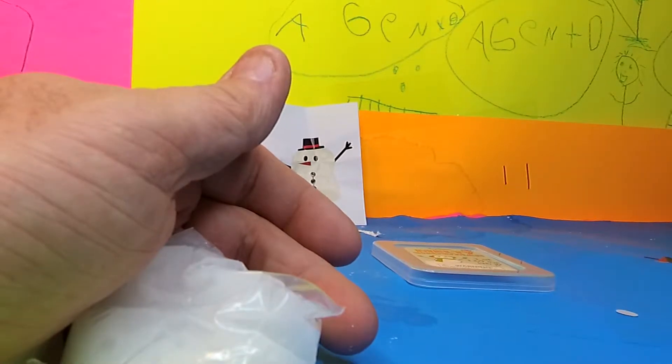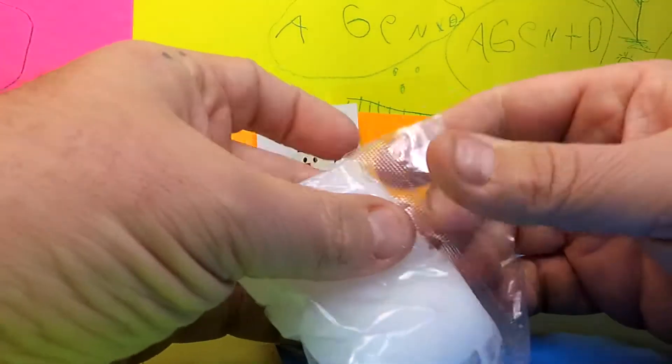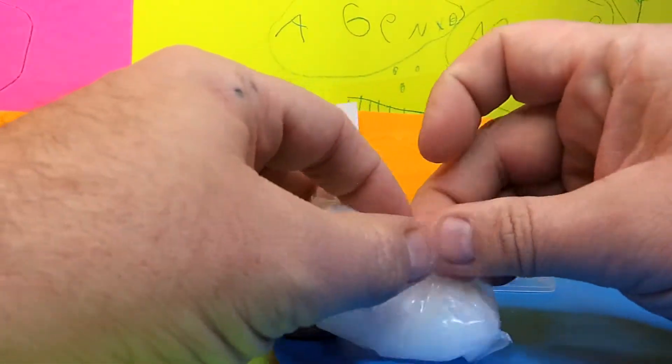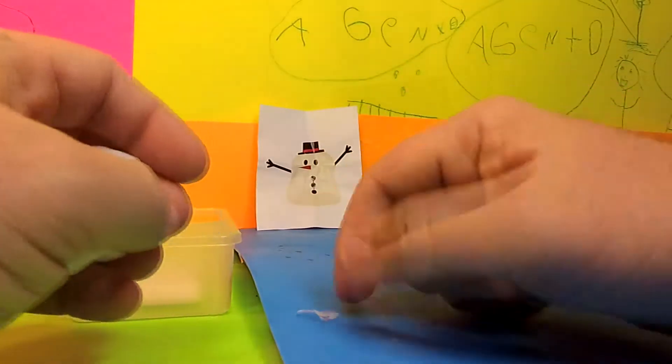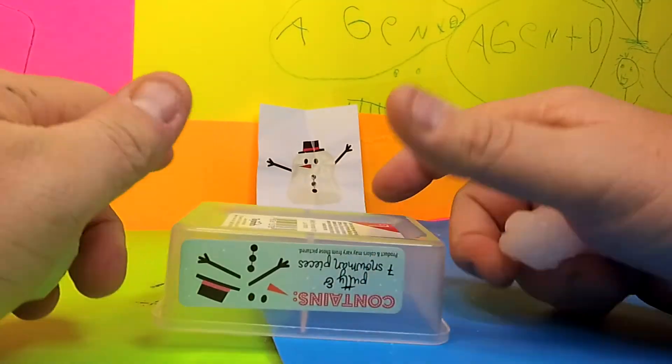We got three buttons for Agent M and two eyes for Agent H. So I get only two stuff. I don't got anything. Here you go. You can have the buttons. All right, we got the snowman stuff out. That's going to be so cool. And we are going to build a snowman.